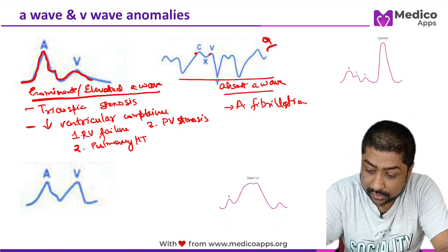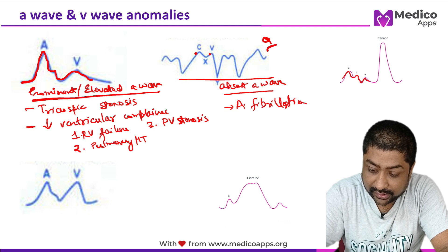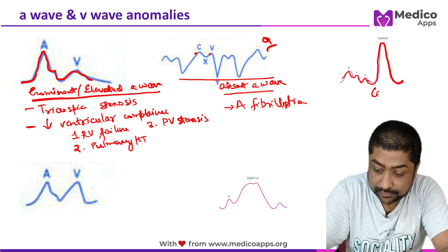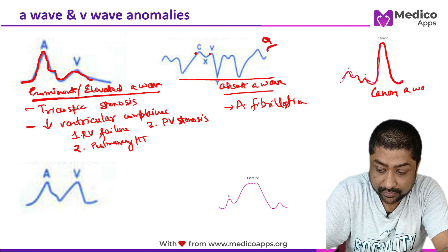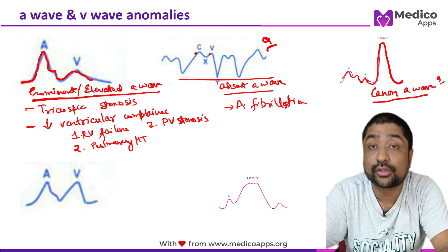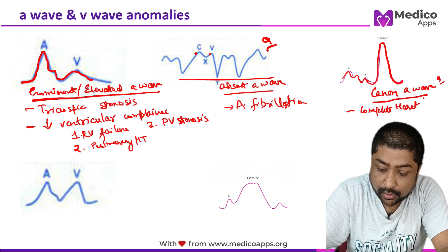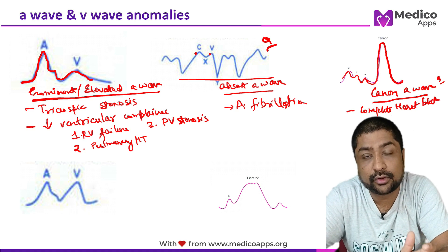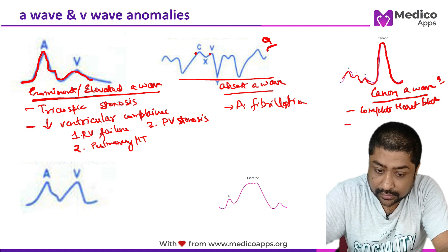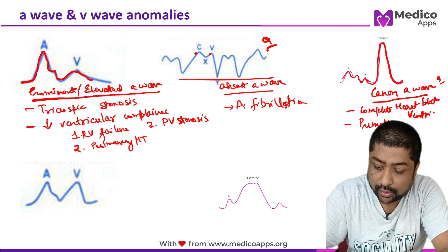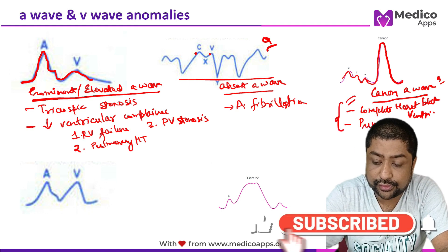Next is the cannon A wave — a very large A wave on the graph. This is very frequently asked in exams. Causes include complete heart block, where the atrium is contracting but the ventricle is not relaxing, premature ventricular contractions, ventricular tachycardia, and ventricular pacing. These are the important causes of cannon A wave.